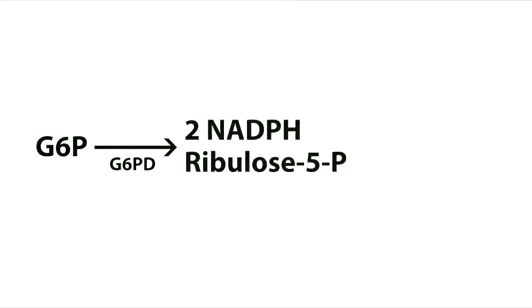We get NADPH through the pentose phosphate pathway. You start with glucose 6-phosphate — after glucose is trapped in the cell by hexokinase or glucokinase. The key enzyme is glucose 6-phosphate dehydrogenase (G6PD), which converts glucose 6-phosphate to ribulose 5-phosphate, generating NADPH. That ribulose 5-phosphate can generate PRPP, essential for nucleotide synthesis, providing the ribose backbone in ribonucleic acids.